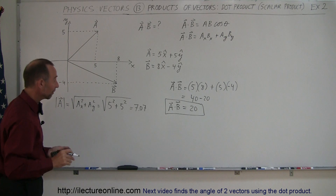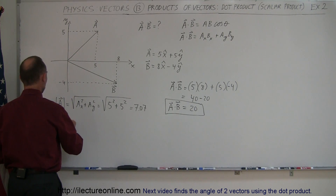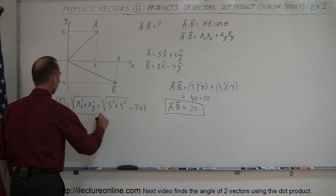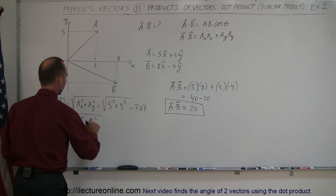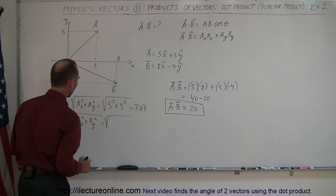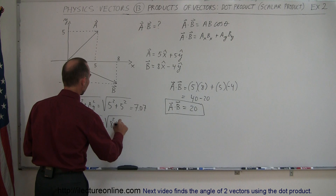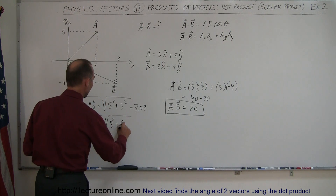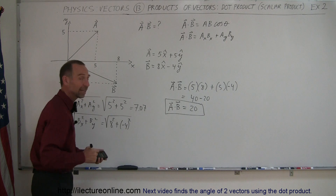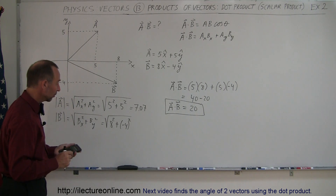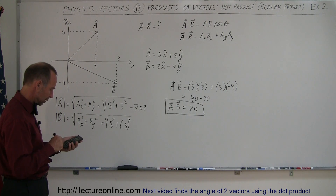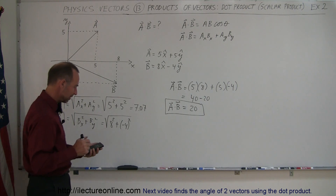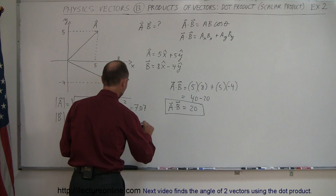The square root of 50 is 7.07. Now for the B vector: the magnitude of B equals the square root of B sub X squared plus B sub Y squared, which is the square root of 8 squared plus negative 4 squared. The negative doesn't matter since we're squaring it, so that's 64 plus 16, which is 80, and the square root of 80 is 8.94.